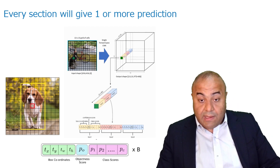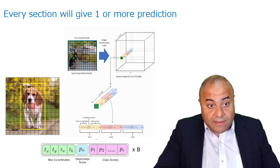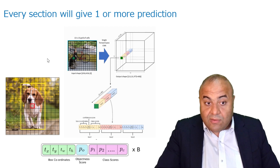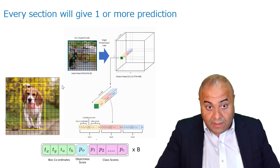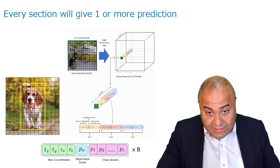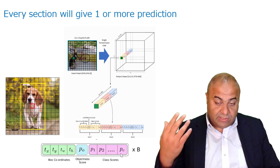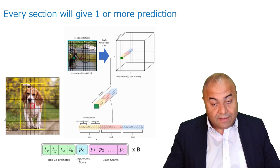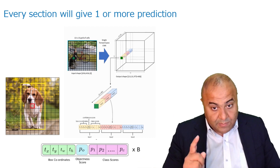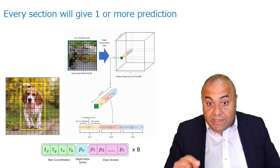Every grid cell gives its own prediction. For example, a specific grid cell will give the location of the dog — X, Y — and the width and height of the bounding box. It will also give the confidence score of whether there is an object, based on what that small grid sees. It will also predict the class: dog, bicycle, car, and so on.